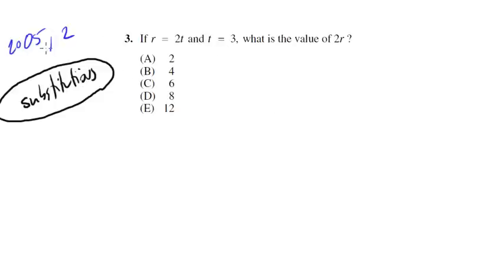The first comes from 2005 test section 2, number 3. If r equals 2t and t equals 3, what is the value of 2r? Notice we're going to have to do some substitutions here. We're going to plug t is 3 into this equation and that will give us the value of r, but then we need to give them 2r.